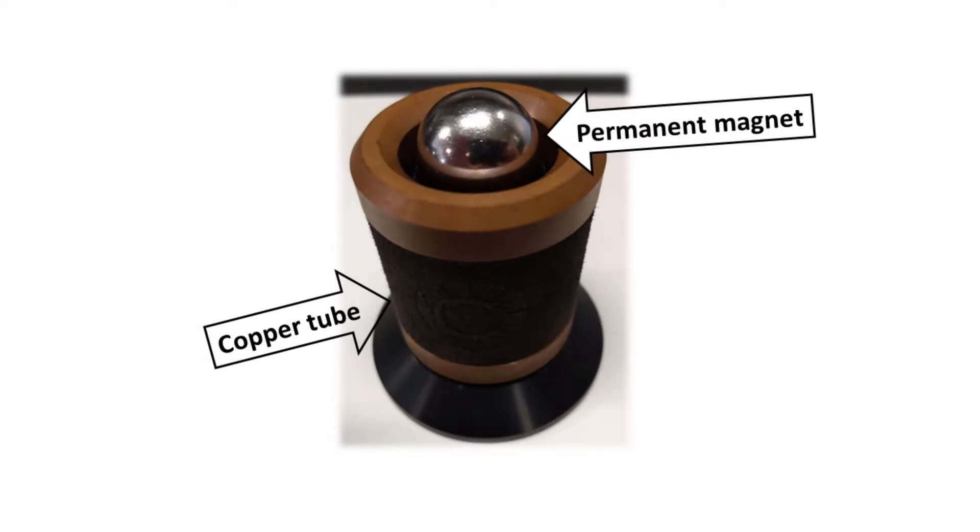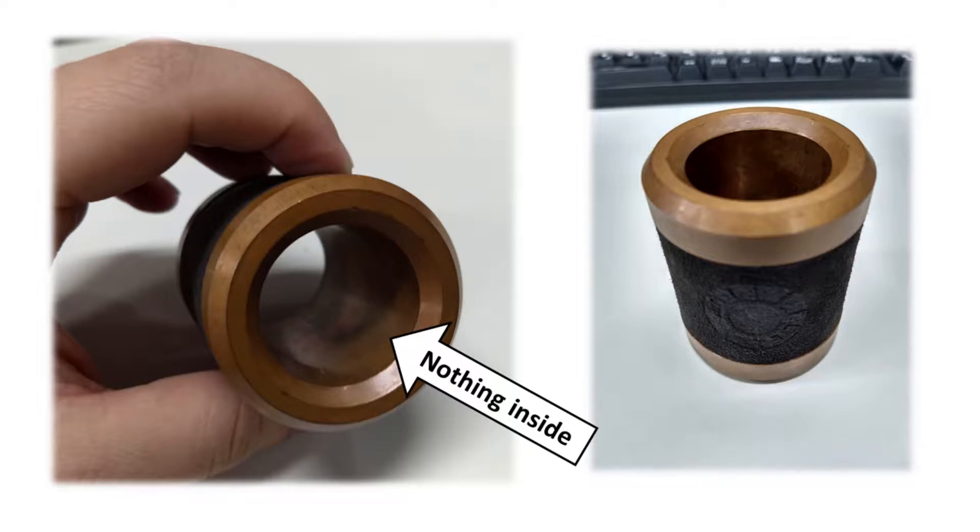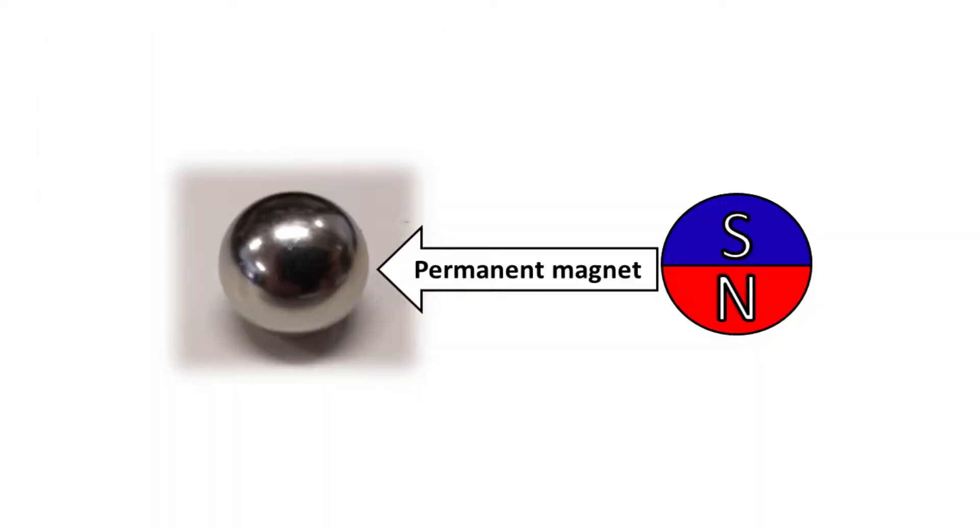This time the experimental setup is very simple. We just have a hollow copper cylinder and a spherical permanent magnet.